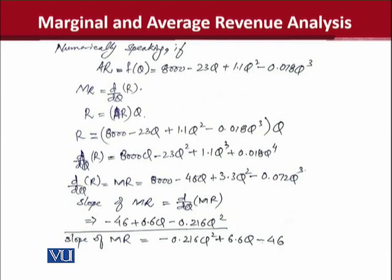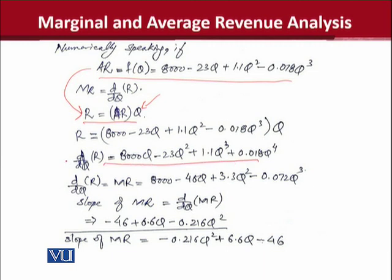Let us see how we can actually do this numerically. उसके लिए हमारे पास again एक average revenue function से start किया गया, और उससे हम further finding कर सकते हैं — that is to find the total revenue. जब total revenue calculate होगा using the same formula जो एक step पहले किया था, तो वो revenue का function अब हम differentiate करेंगे with respect to q, और उससे marginal revenue function develop होगा, और फिर उसका derivative जब calculate करेंगे तो slope of marginal revenue function generate हो जाएगी.